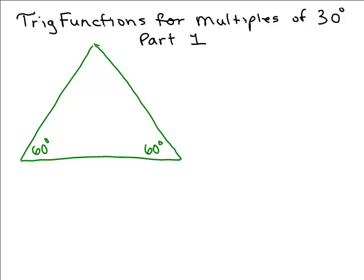In this video, we're going to figure out how to get the trig functions for multiples of 30 degrees. We're going to figure this out by starting with an equilateral triangle. So an equilateral triangle, all the sides are the same length and the angles are all the same, 60 degrees each.